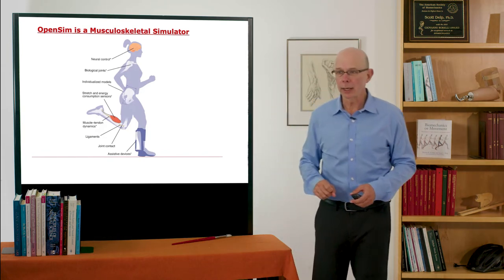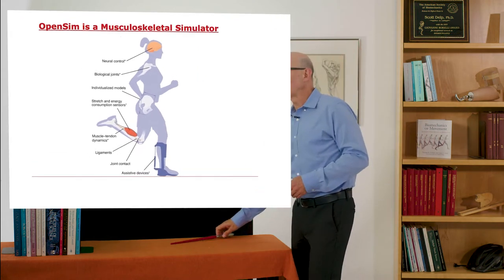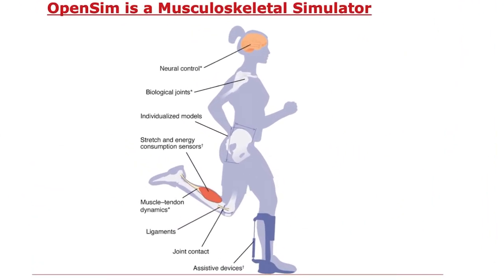What do I mean by that? There are methods that represent the nervous system, neuromuscular controllers. There are biological joints. Now we aren't built with hinge joints and ball-and-socket joints—your shoulder is really complicated, your knee is complicated as well. So there are methods in OpenSim that let you simulate those biological, complex joints.